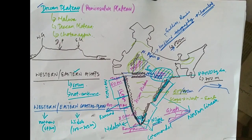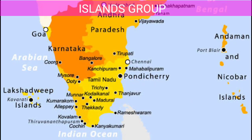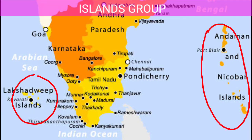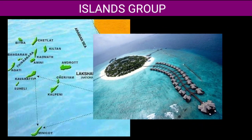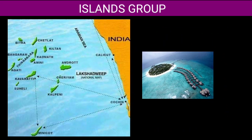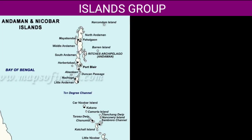Another physiographic division of our country is the Island Groups. There are two island groups: the Lakshadweep Islands in the Arabian Sea and the Andaman and Nicobar Islands in the Bay of Bengal. The Lakshadweep Islands are 200 to 400 kilometers away from the Kerala coast. There are 36 islands in total in this archipelago, of which 11 are inhabited. These islands are believed to be built up of coral deposits, and some beautiful beaches present there make them good for tourism.